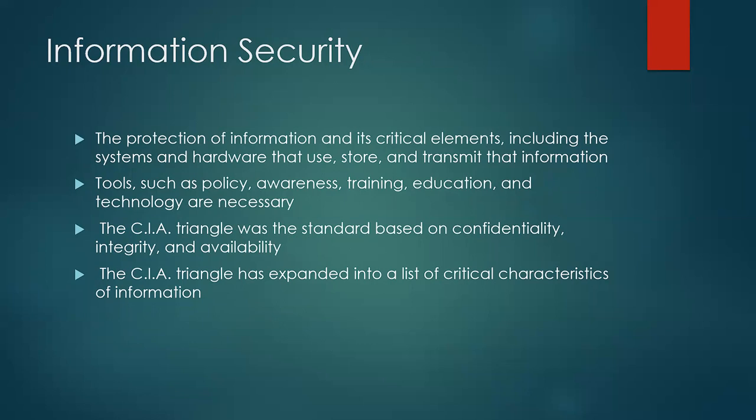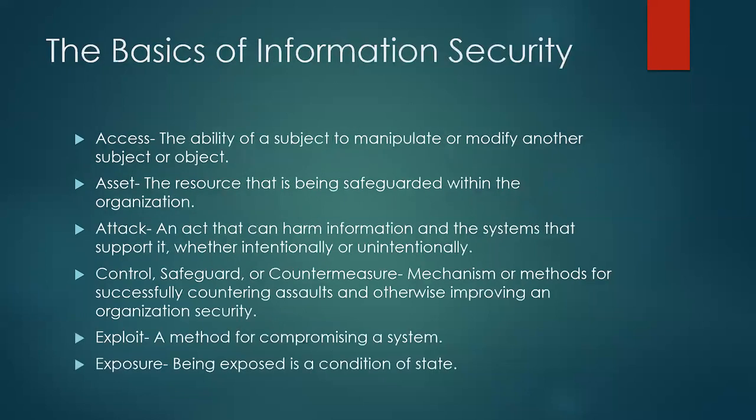The CIA triangle has expanded into a list of critical characteristics of information. The basics of information security include: access — the ability of a subject to manipulate or modify another subject or object; asset — the resource being safeguarded within the organization; attack — an act that can harm the information system that supports it, whether intentionally or unintentionally; and control — a safeguard or countermeasure mechanism for successfully countering assaults.